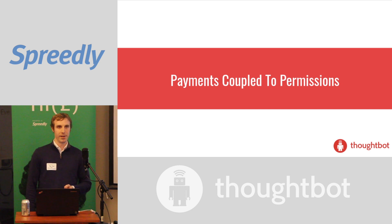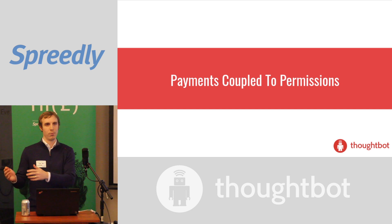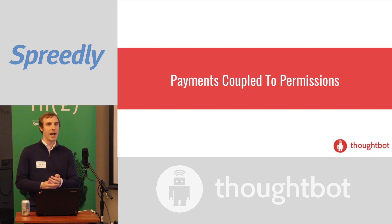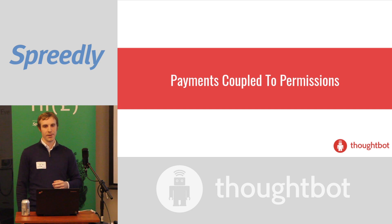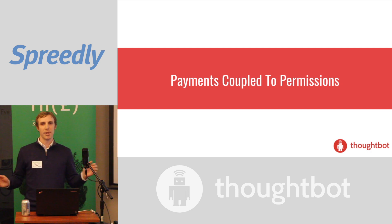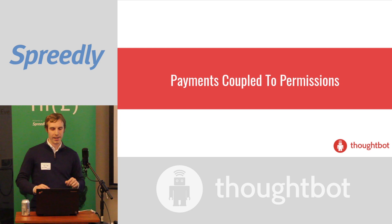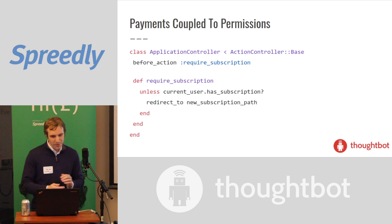Another common problem that people run into when writing software that deals with payments is that they tightly couple their payments to their permissions. Permissions are what decide what you're allowed to do in a given system. So if you're selling a subscription service like Netflix, you need to have a subscription to see it. And so intuitively you might think those two concepts are completely intertwined - having a Netflix subscription and paying for it is the same as being able to access Netflix content. But that's actually not really the case because there are a lot of subtleties in those two cases that are different.